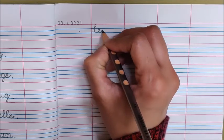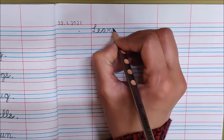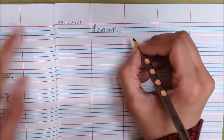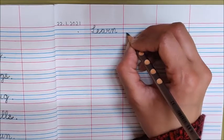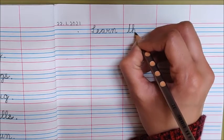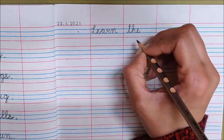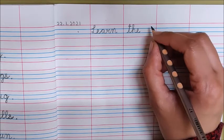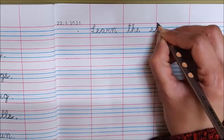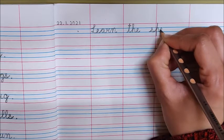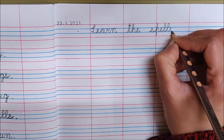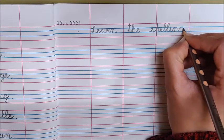Learn. L-E-A-R-N. Learn. Leave one finger space and write down the. What is the spelling of the? T-H-E the. Now again leave one finger space and write down spelling. S-P-E-L-L-I-N-G.